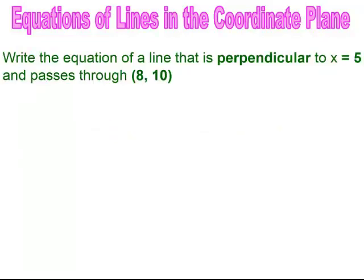Pause and try. For a perpendicular line to x equals 5 through point (10, something): perpendicular to undefined slope gives slope 0, so the equation is y equals 10.